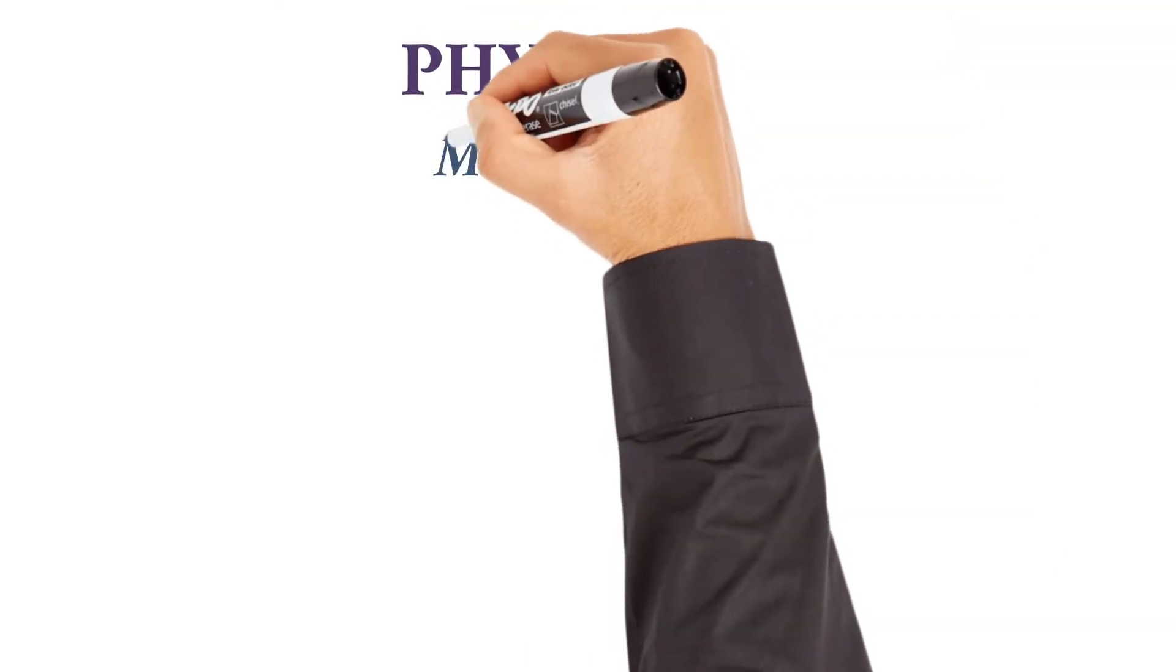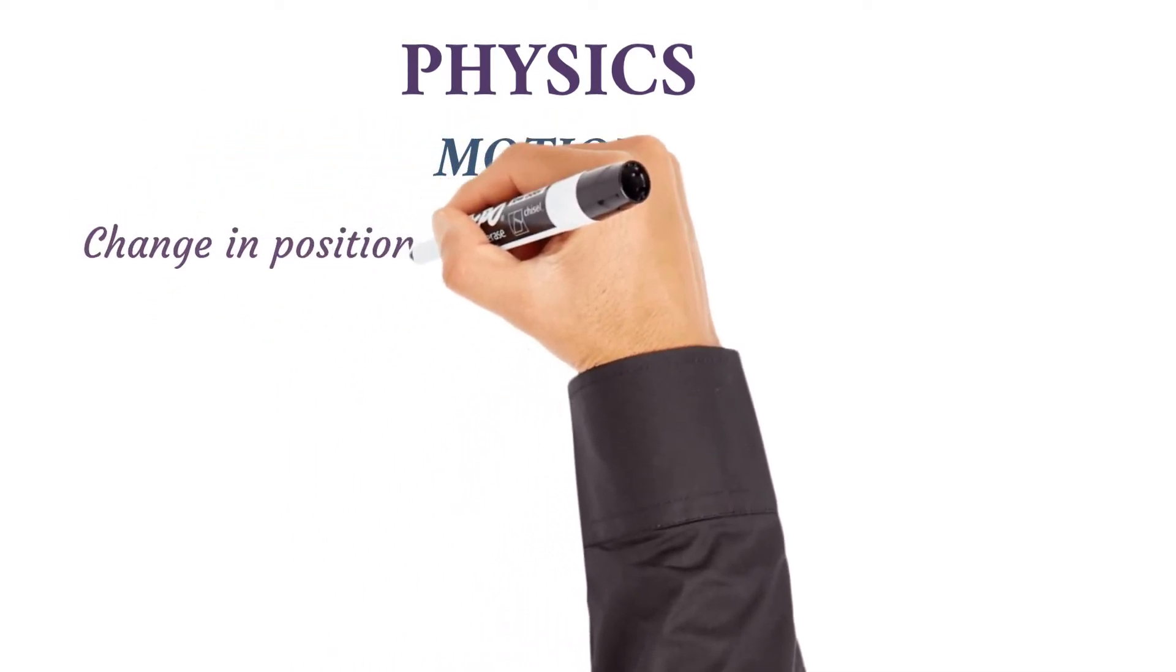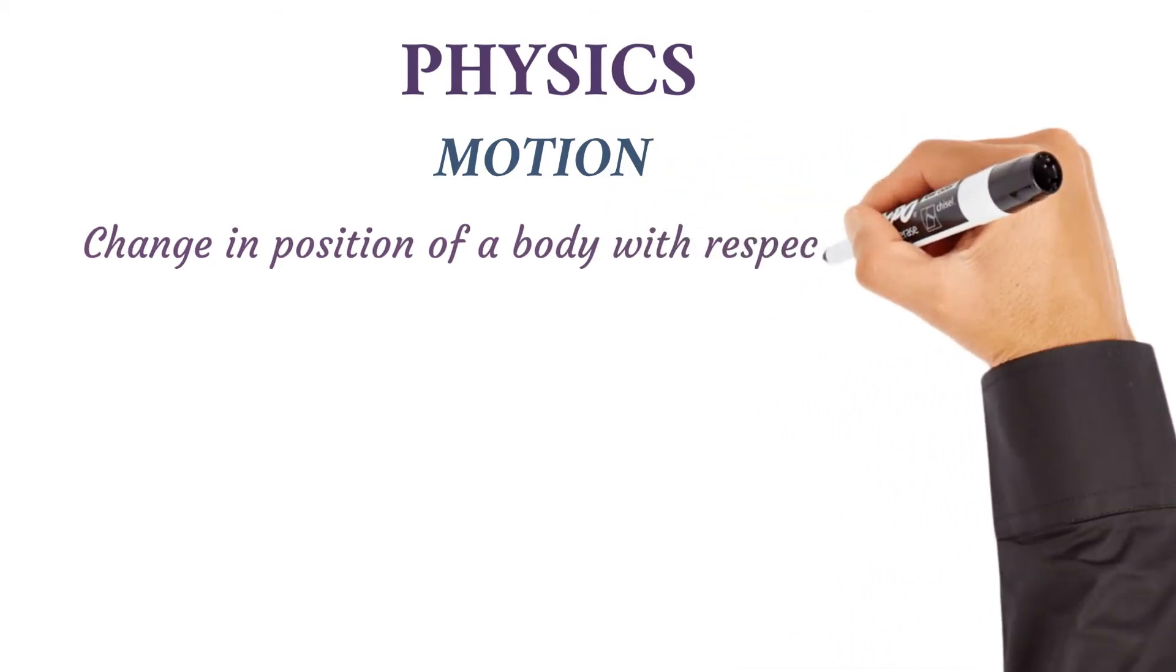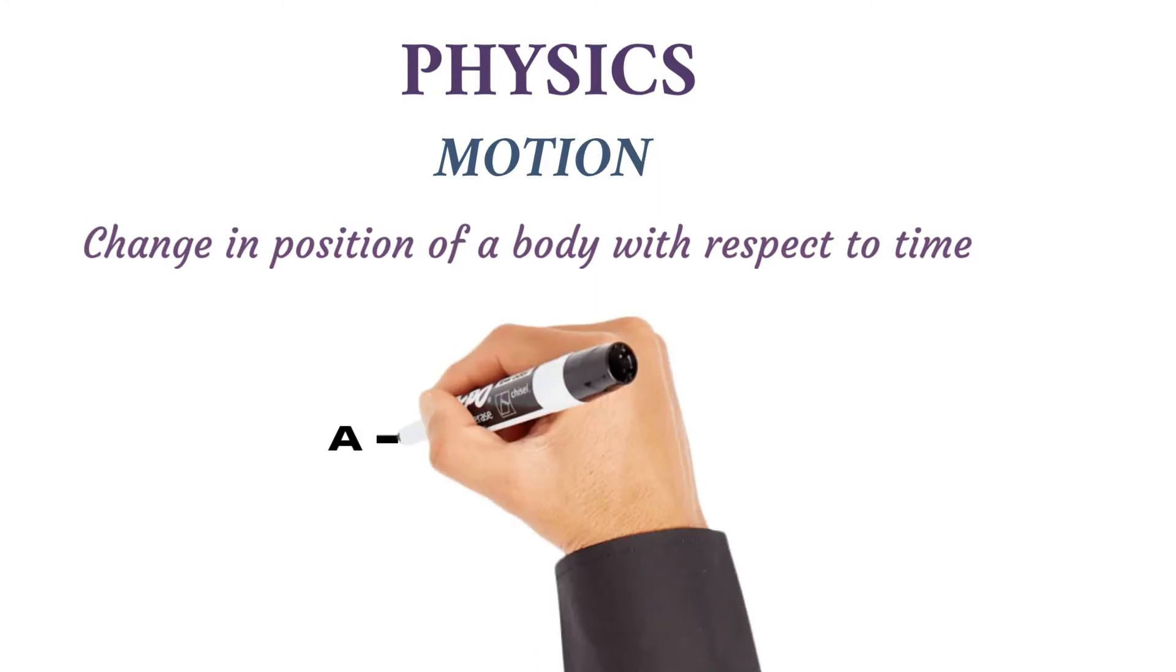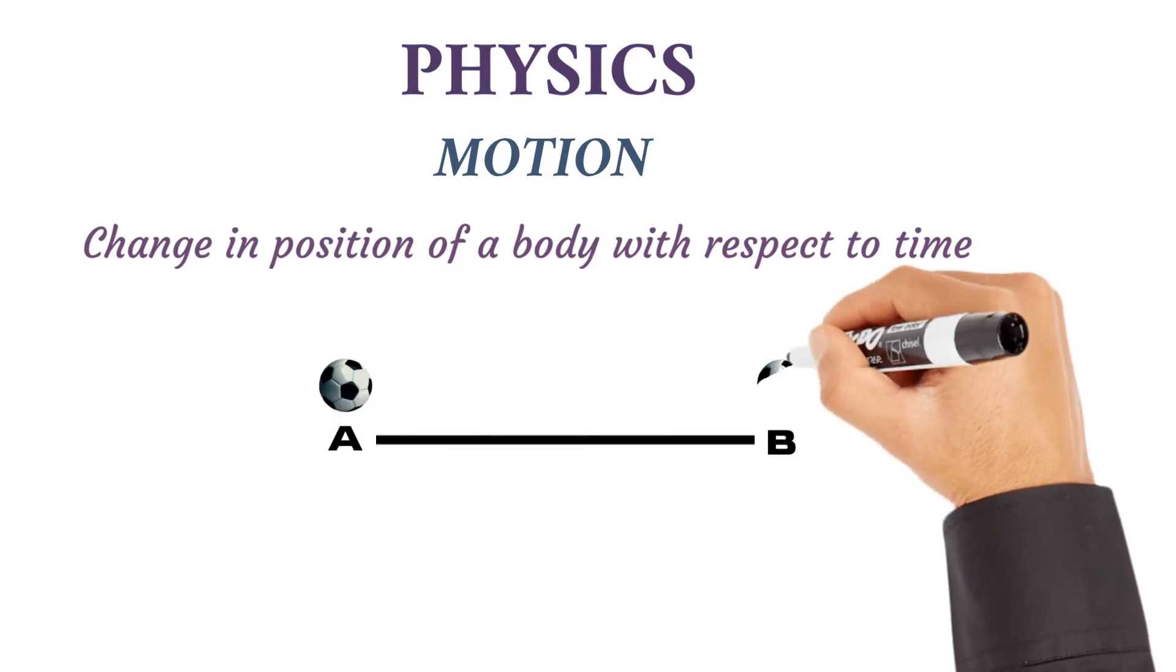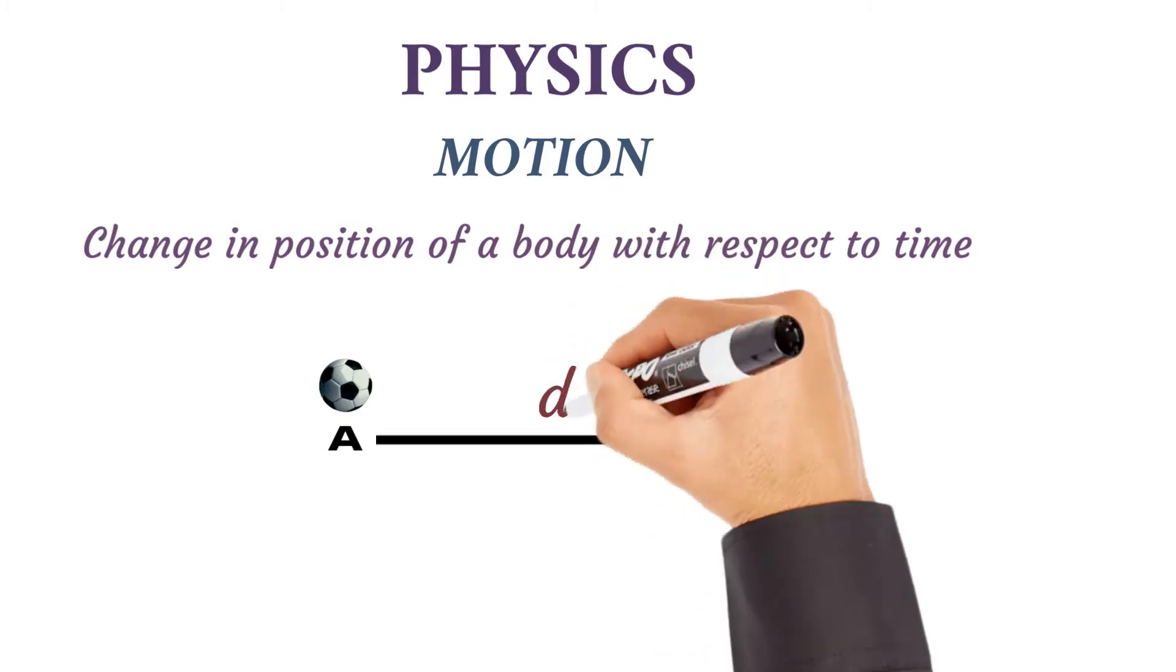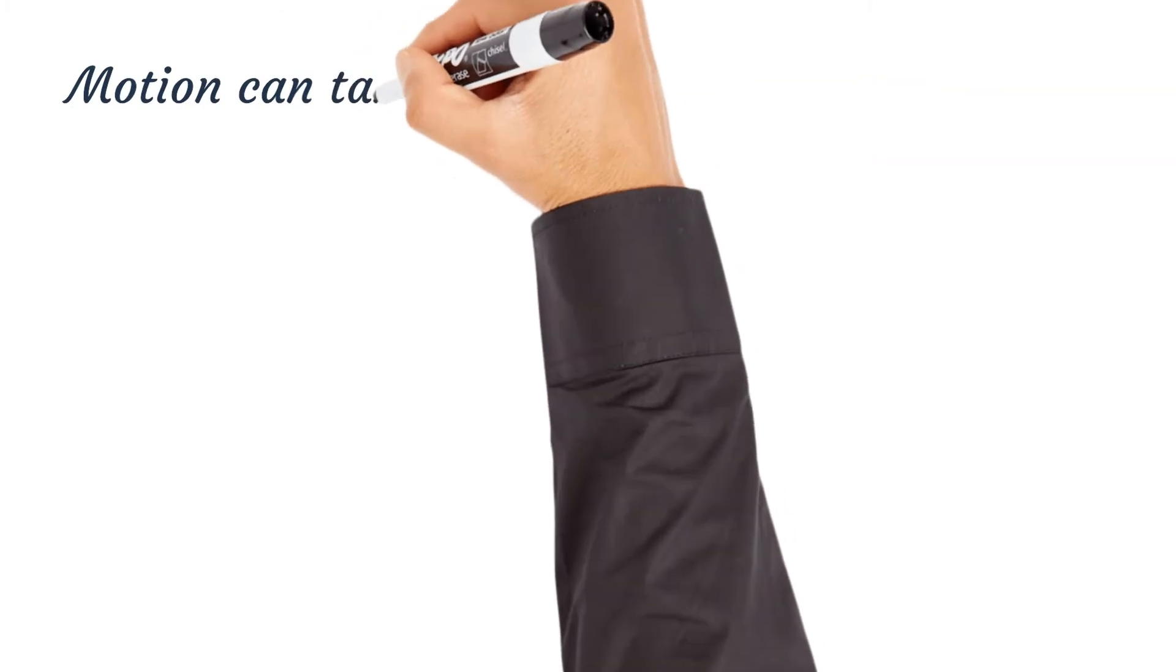In this video we are looking at motion in physics. Motion is defined as a change in position of a body with respect to time. For example, consider two points, point A and point B. If a ball moves from point A to point B and covers a distance D in time T, then the ball has undergone motion.